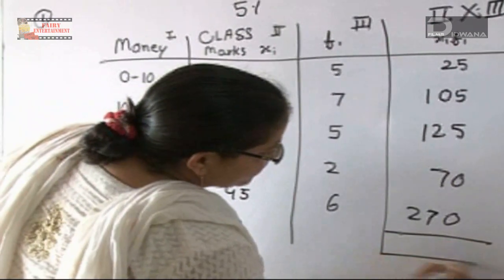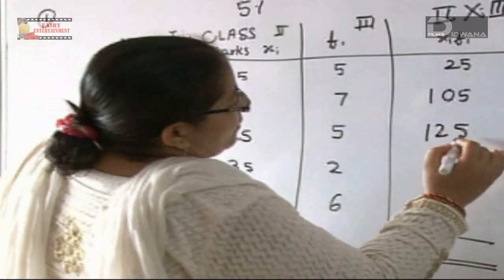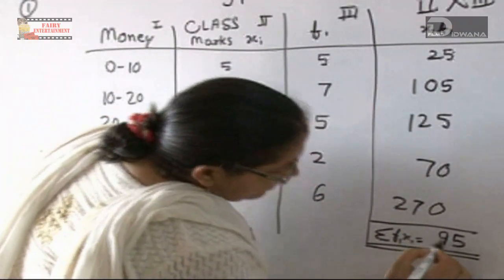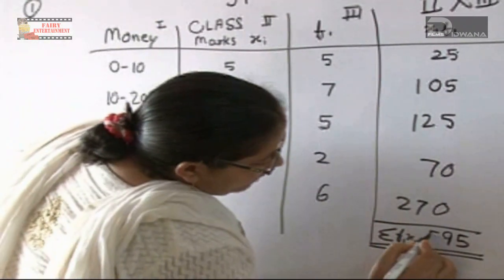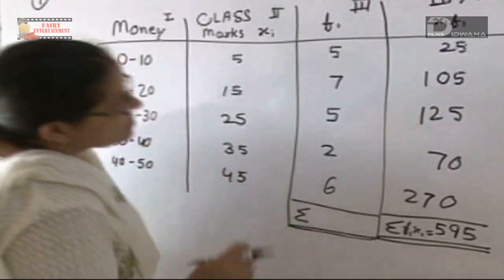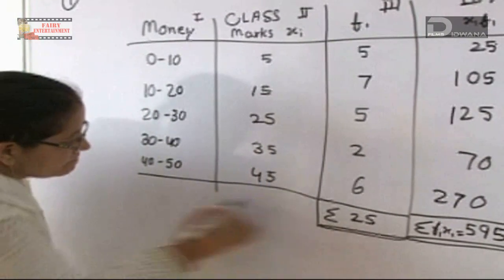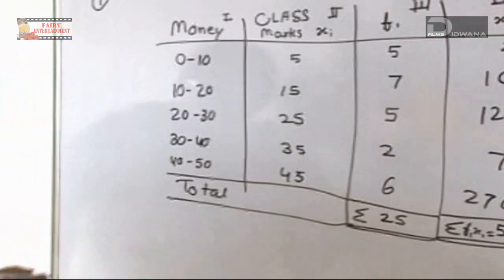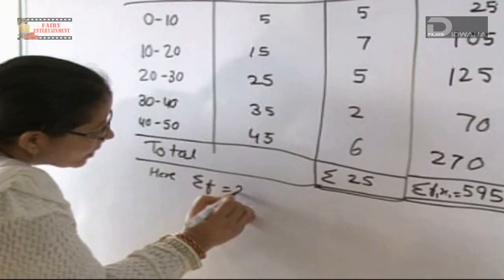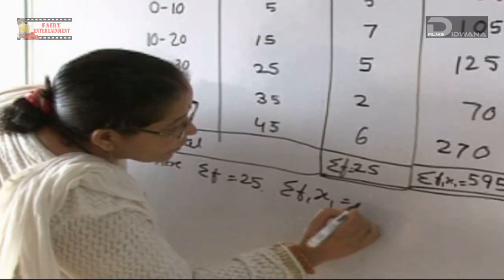We add all the fx values. The sum of fx equals 595. We also find the sum of frequencies: 5+7+5+2+6 equals 25. So, sum of f = 25 and sum of fx = 595.